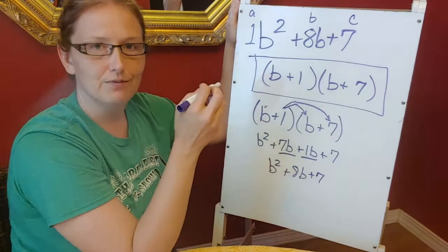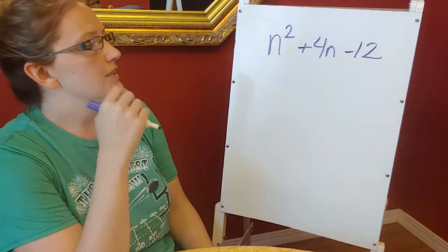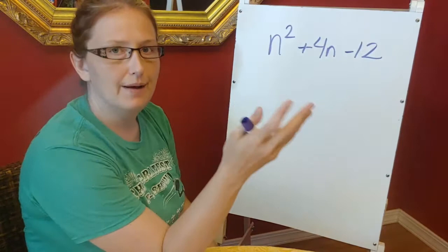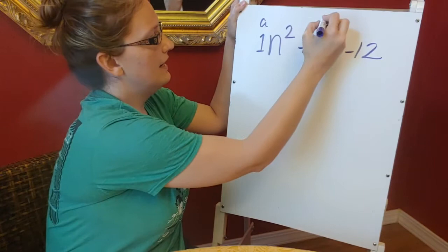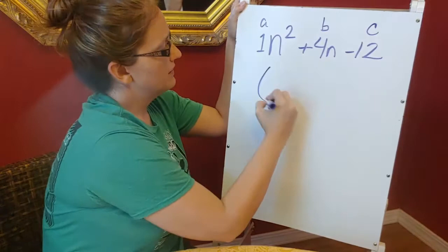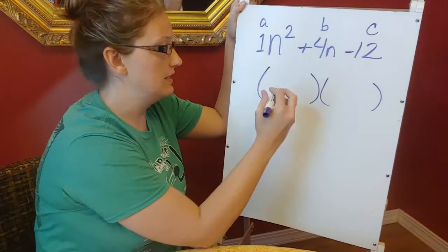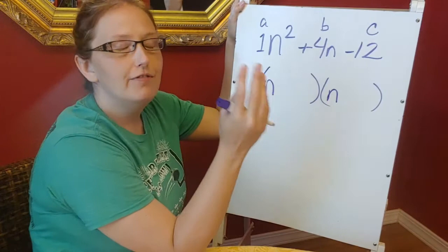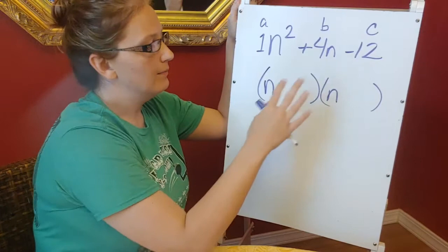All right, here's another problem. This one isn't a plus plus like we had before, this is a plus minus, so we're going to look at what happens whenever we have that going on. I still have a 1 as my a, my b is a 4, and my c is a -12. So I'm going to set up my parentheses. n² is going to factor to n times n, but now I need to look at c and what are the factors of c that when I add them together give me a positive 4.